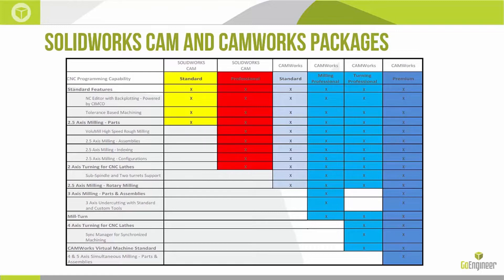You see the package names listed across the top, starting on the left with SOLIDWORKS CAM Standard in yellow, working all the way to the right with CAMWorks Premium on the far right. On the left side in list form, we see rows for each of the different features and functionalities available within each package. I want to break each of these down and give everyone a clear idea of what each item means and what package level you need to buy to get it.